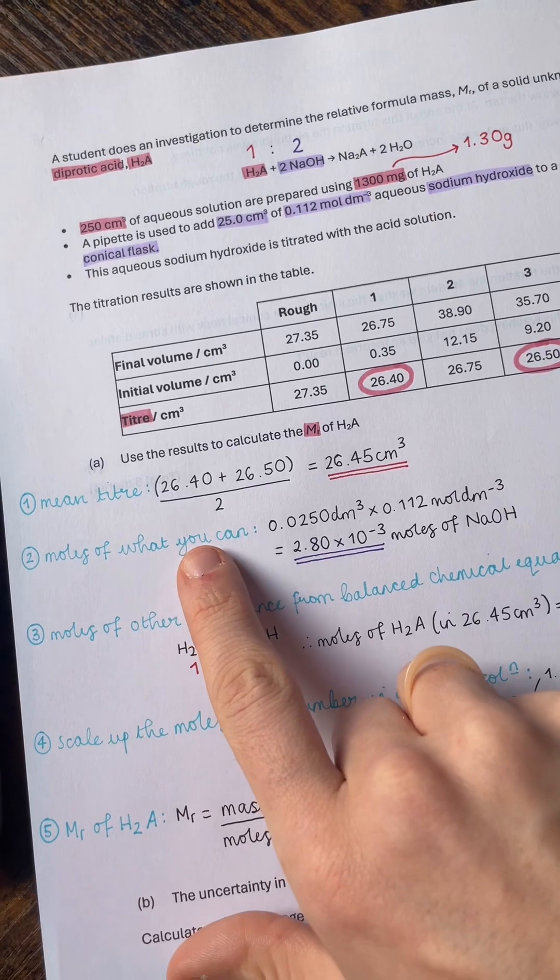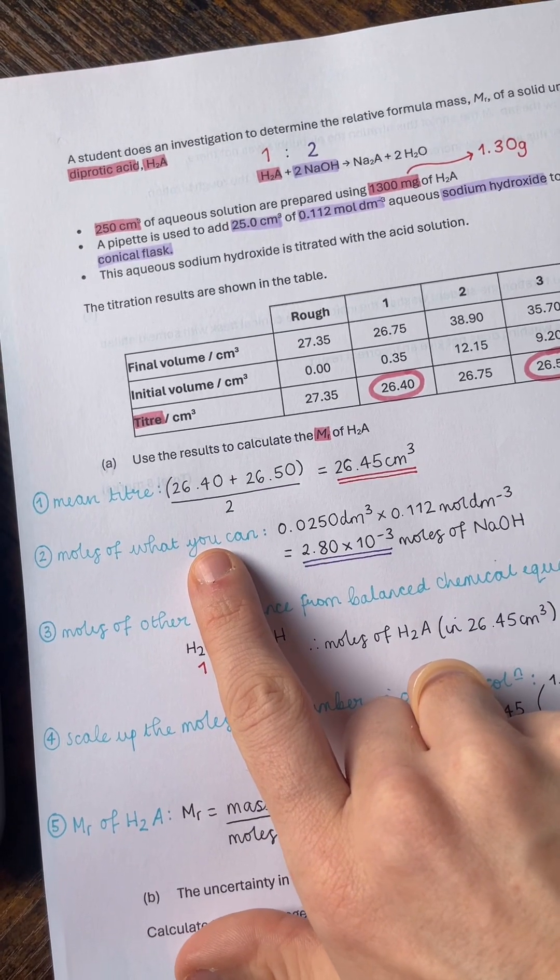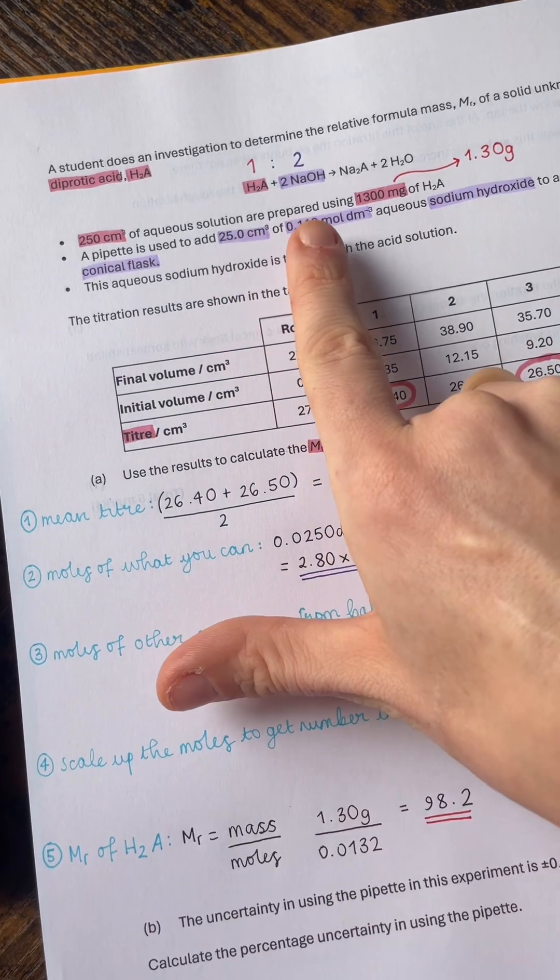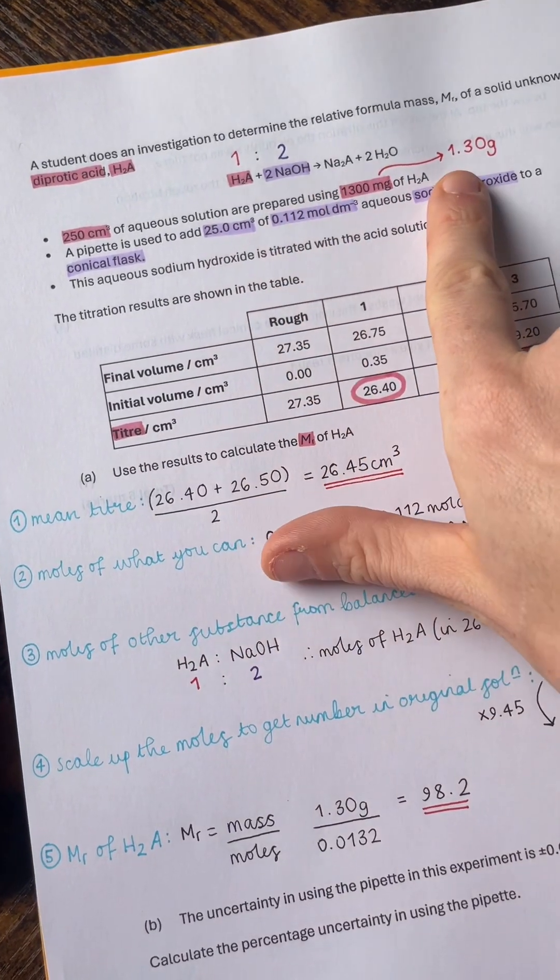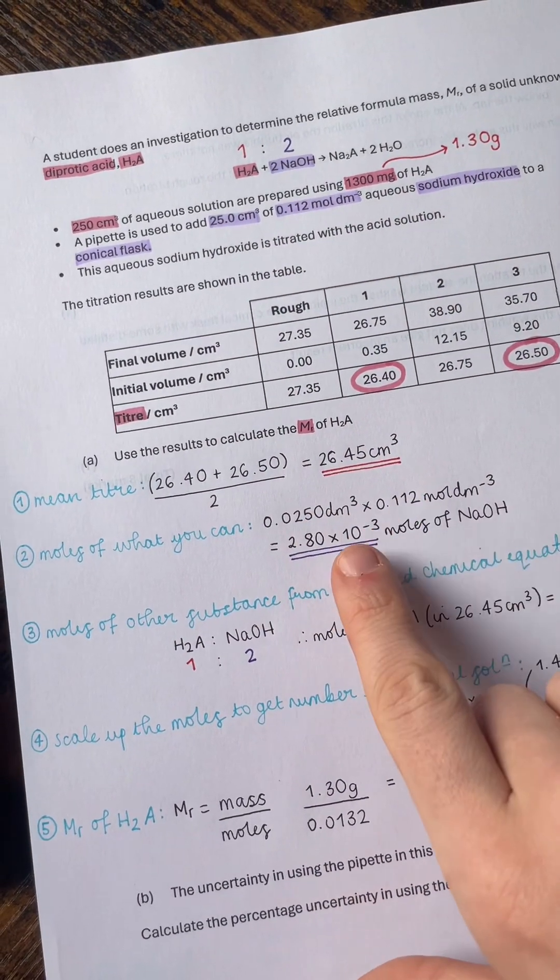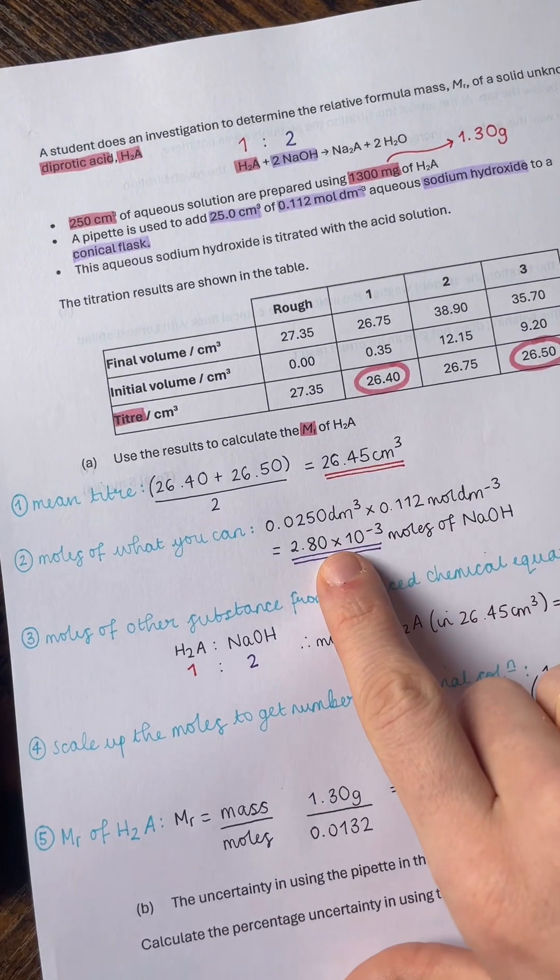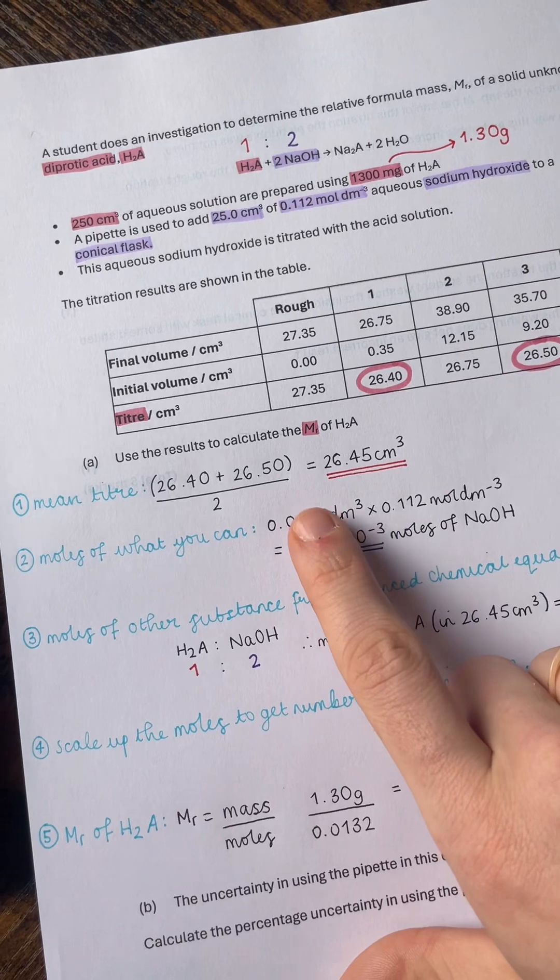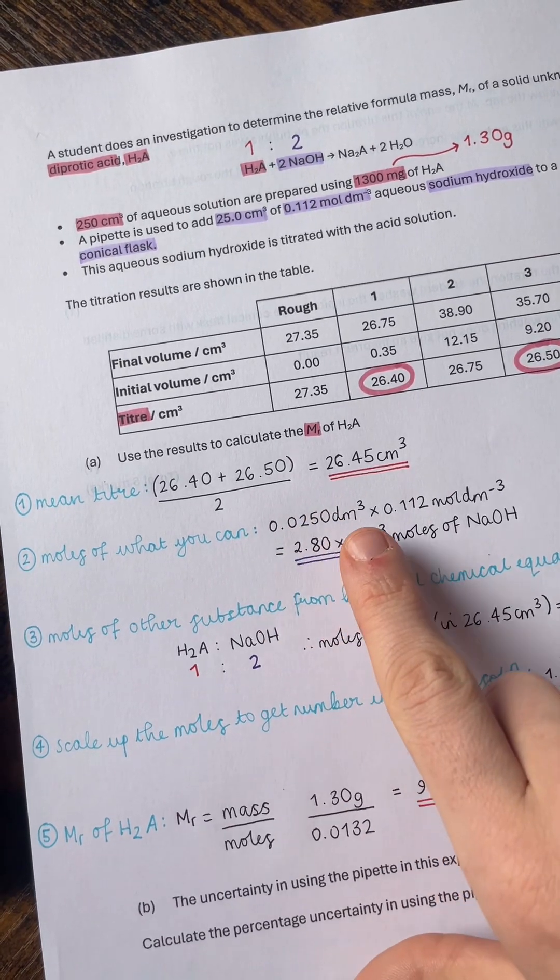Step two is always get the moles of what you can. And what I mean by that is it will depend on what information you've got. But we were given a volume and a concentration for the sodium hydroxide solution, so that is what we can then work out the moles of, which comes to 2.80 × 10⁻³ once we've converted our volume into dm³.